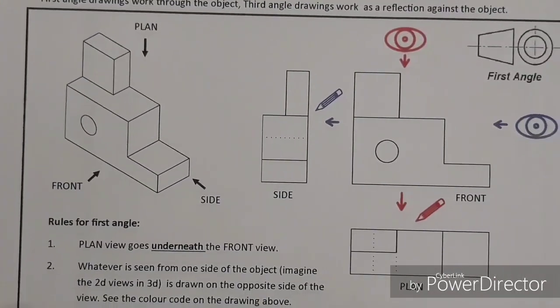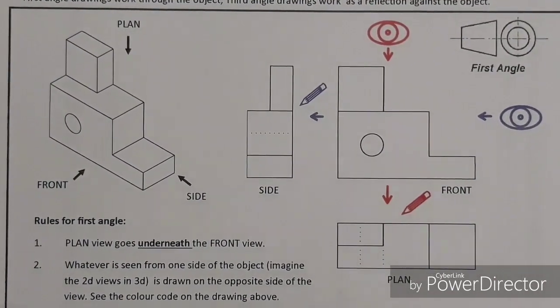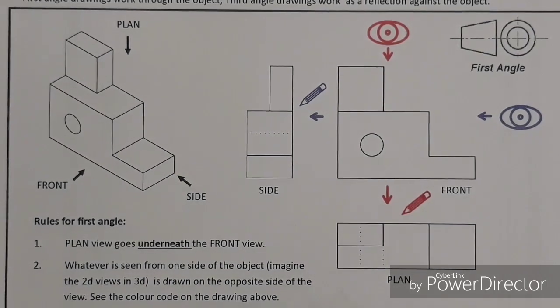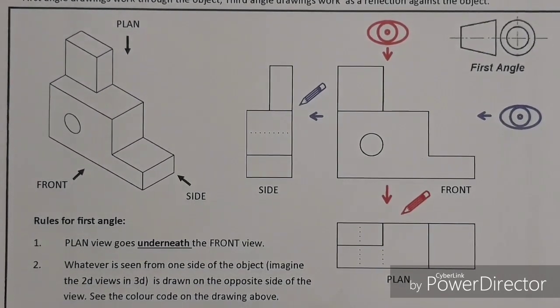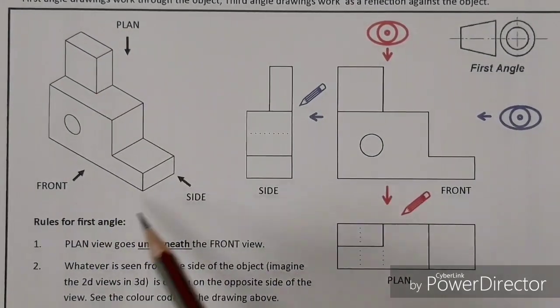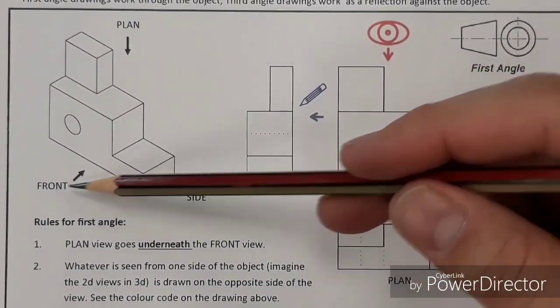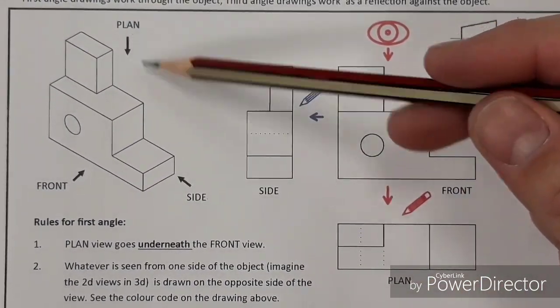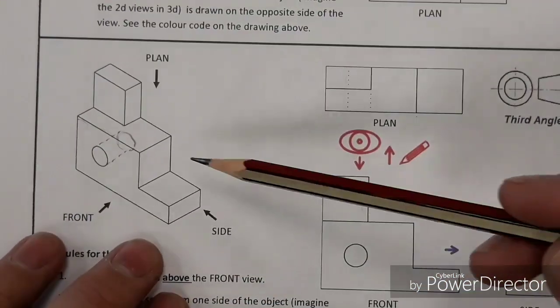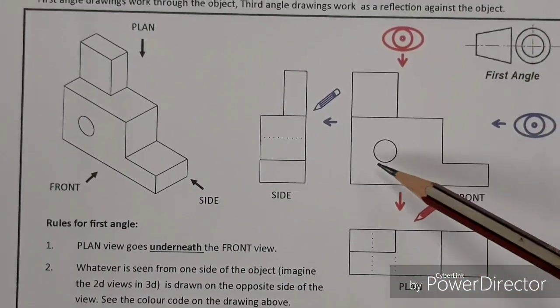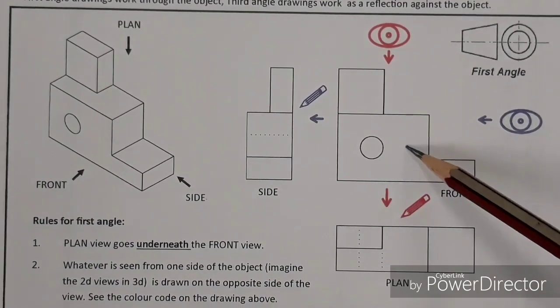In terms of first angle, we have a slightly different scenario. And for me, I find this one a little bit more complicated to get my head around, and from my experience, students do also. We have three views of the 3D shape. These three views, front, side, and plan, just as we had them before. Nothing has changed, the drawing is exactly the same. However, in this instance, things get flipped around.